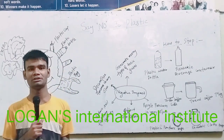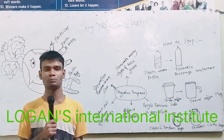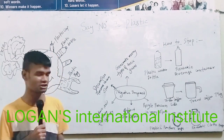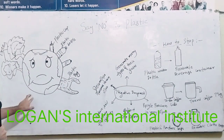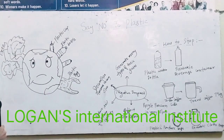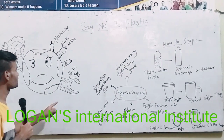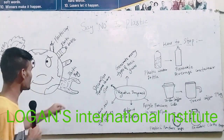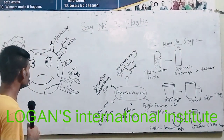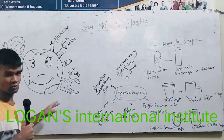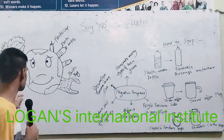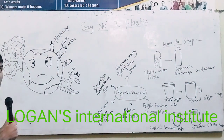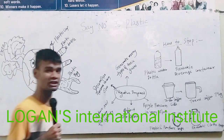Hi friends, good morning to all of you. I am standing for a picture-making class. I am going to describe this picture. This is the Earth — one side of the Earth has many bottles, plastic cups, plastic bottles, and plastic bags — this is single-use plastic. The other side of the Earth has many trees.